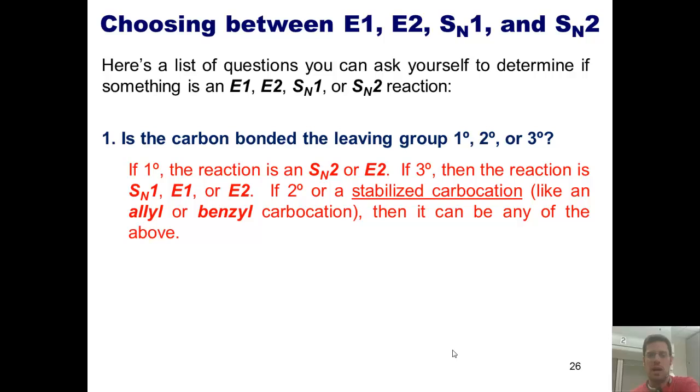If it's primary, then the reaction can only be SN2 or E2. Why? Because in E1 and SN1 reactions, the leaving group takes off first, giving me a carbocation. Will that ever occur with a primary carbon? Am I ever going to get a primary carbocation? No, they're way too unstable.